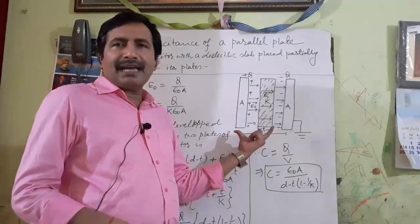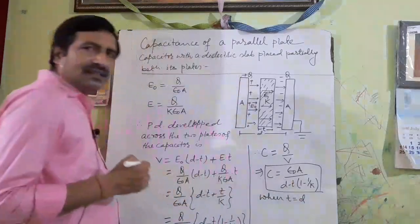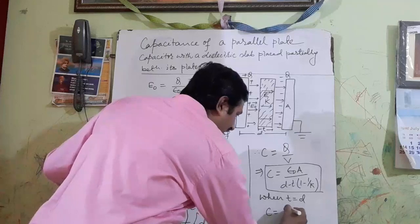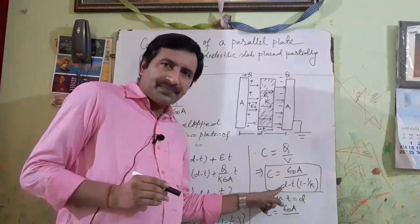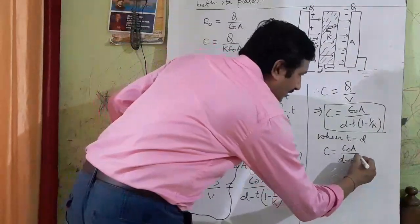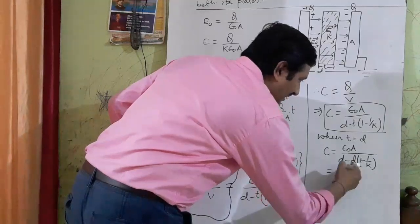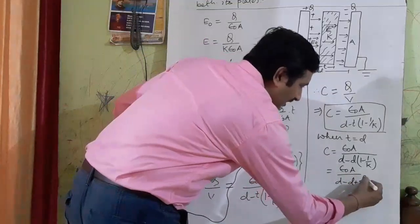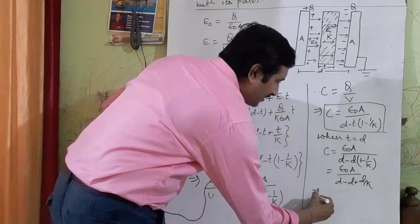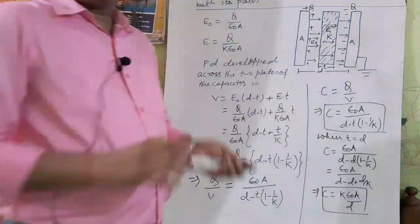Now what will happen if you completely fill the space between the two plates with the dielectric? That means T will become D. When T = D, substituting into the formula: C = ε₀A / [D − D(1 − 1/K)] = ε₀A / [D − D + D/K] = ε₀A / (D/K). So ultimately C = Kε₀A / D, which is the well-known result for a capacitor fully filled with dielectric.